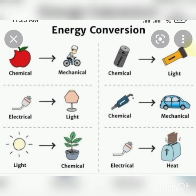For example, in electrical appliances, take an electric fan. In an electric fan, electrical energy is converted into mechanical energy. From the law of conservation of energy, energy cannot be created and it cannot be destroyed, but it is changed from one form of energy into another form of energy. This is the law of conservation of energy.